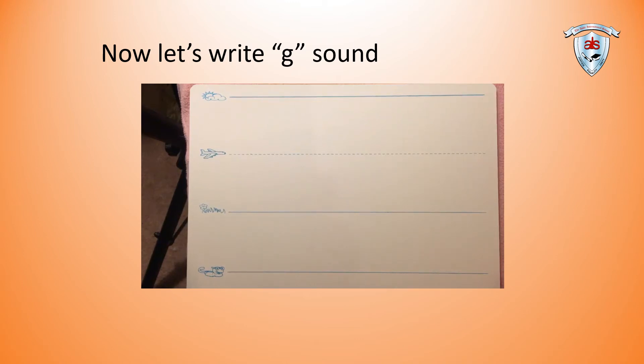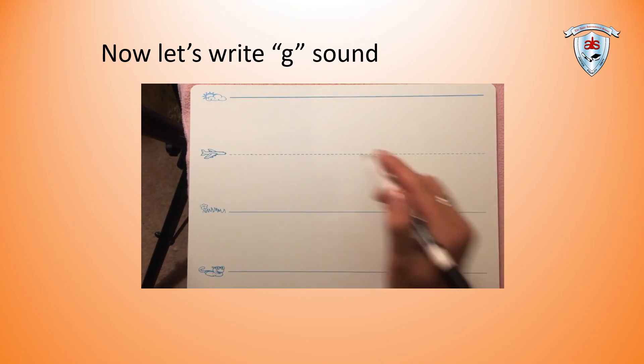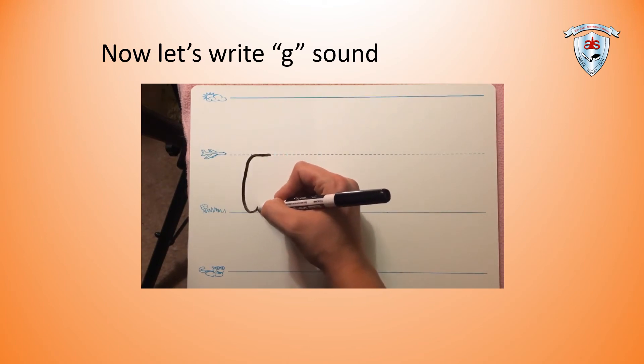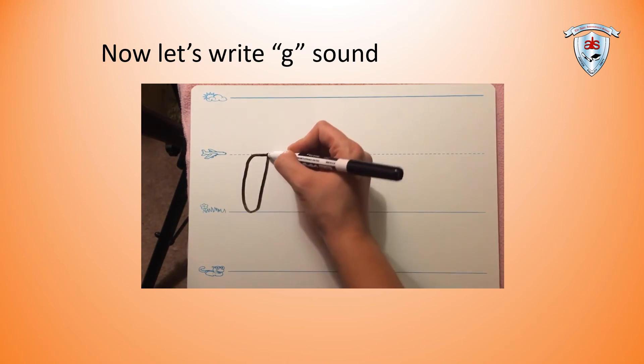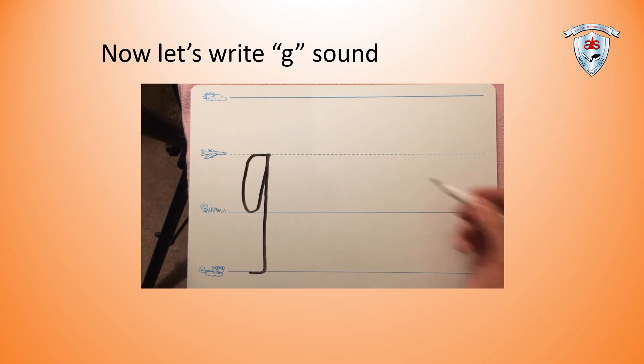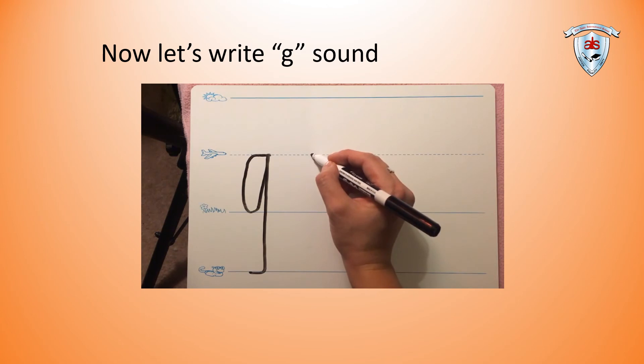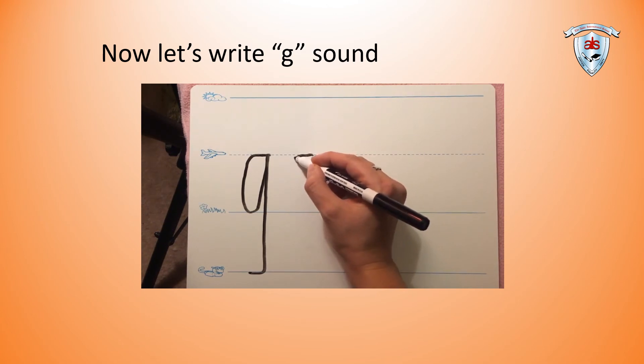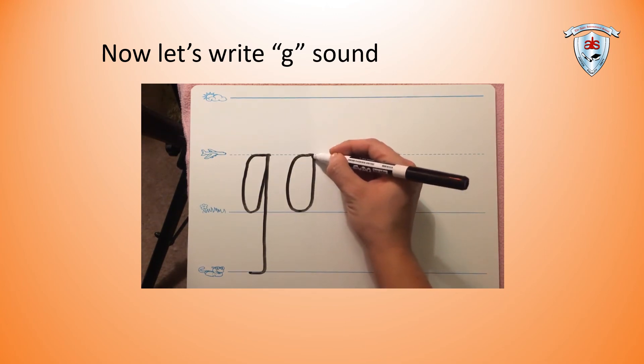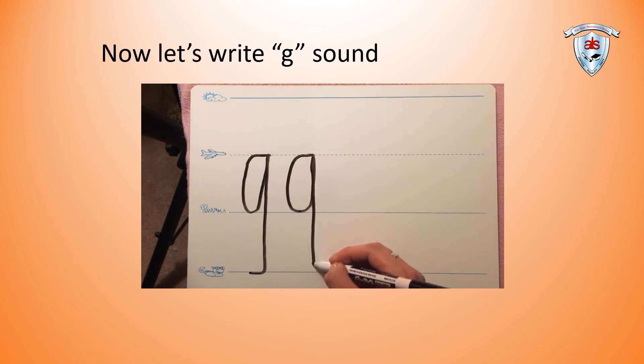G is a plain line round letter. It starts just like the letter C. Start on the plain line, fly back on the plain line, go down and around to the grass line, up to the plain line, and all the way down to the worm line. Start on the plain line, fly back on the plain line, go down and around to the grass line, go up to the plain line, and all the way down to the worm line.